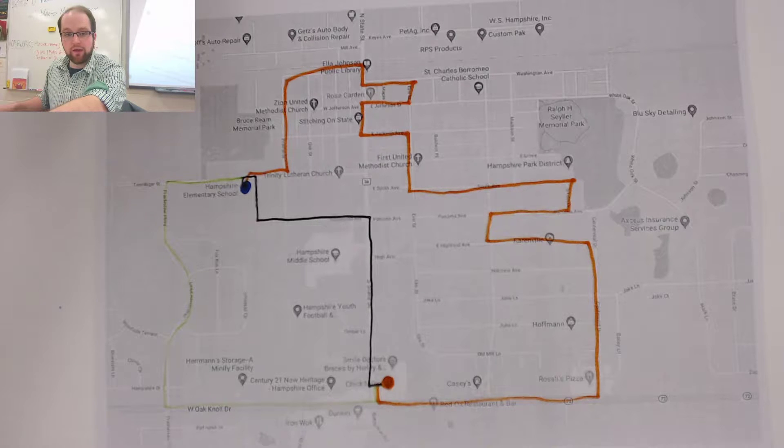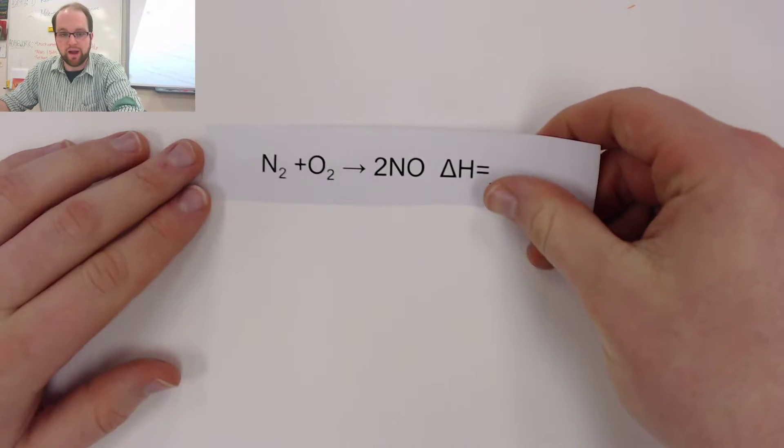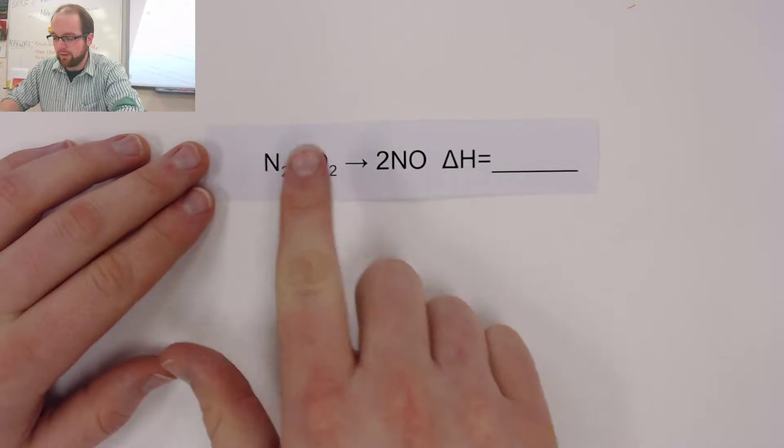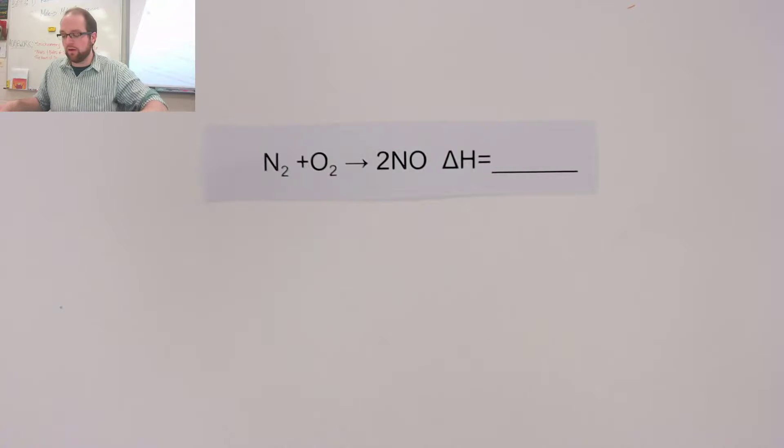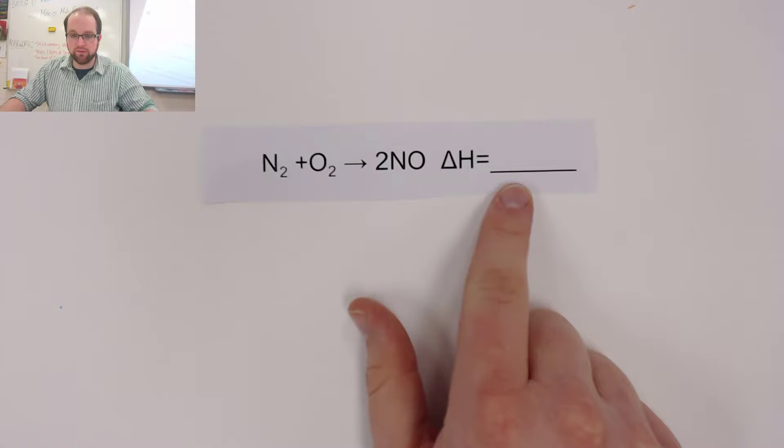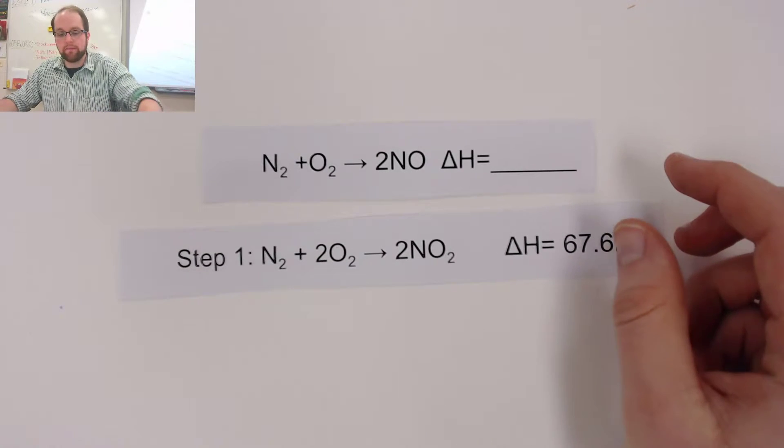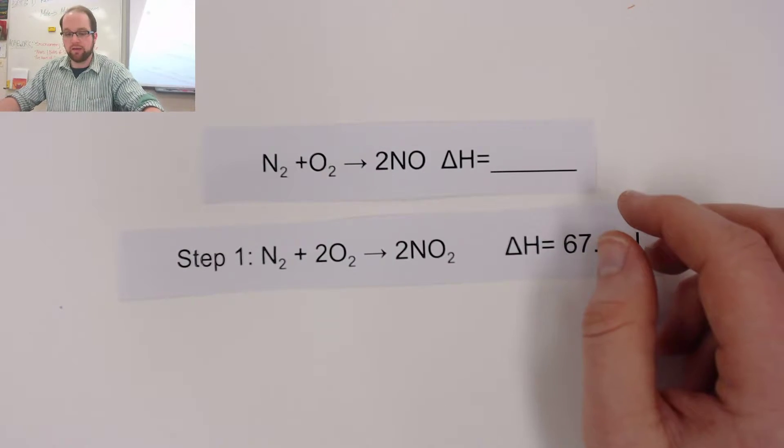So let's take a look at a specific reaction together. Let's take a look at a very simple reaction where we're taking some nitrogen and we're reacting with some oxygen to make some nitrogen monoxide. I want to figure out this delta H of this reaction.